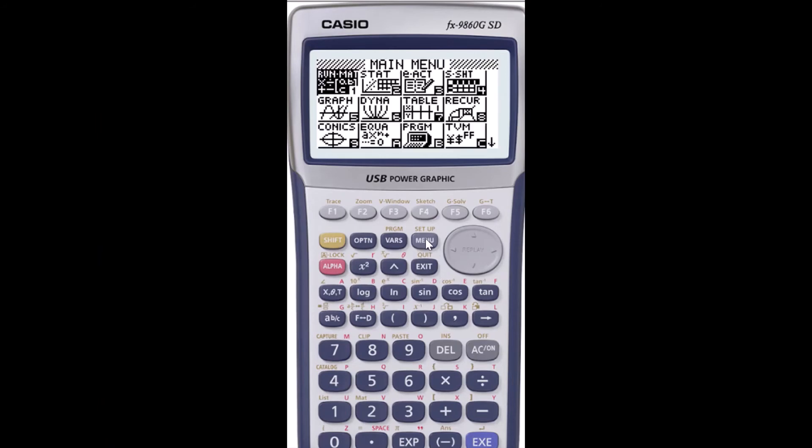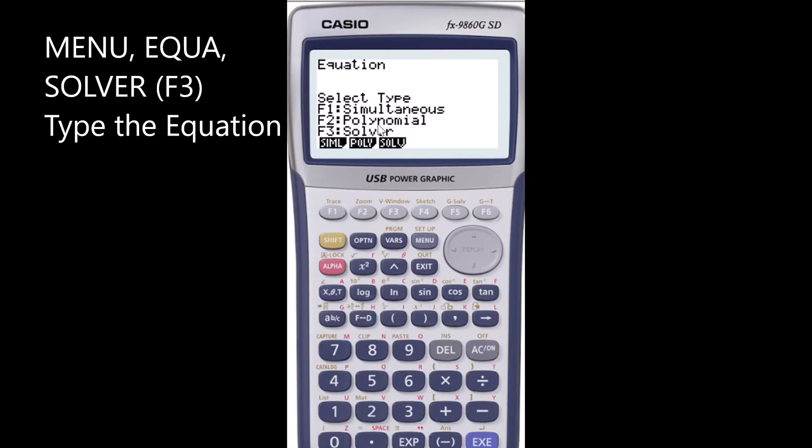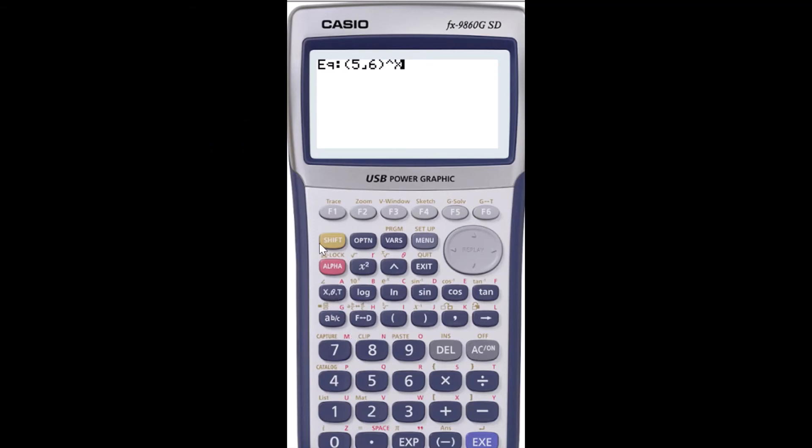So using the graphics calculator we'll go to equations, so we'll go to equation solver. Select F3 to get to solver and then we'll type the equation. So we had 5/6, so 5/6 raised to the power of n, and n will be using x theta t for unknown power, is equal to 0.1. Remember it was 0.1 or less, less than or equal to. And then I'll hit enter twice.